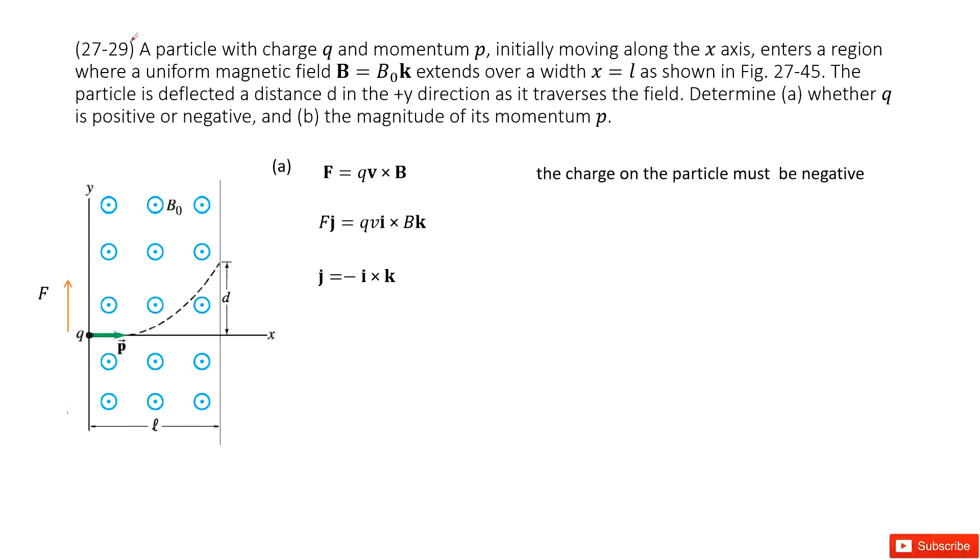So we have a charged particle with momentum p, initially moving along the x-axis, and it enters a region where a uniform magnetic field is given. It is in the k component. We know the particle is deflected a distance d in the positive y direction. So it moves this way. First, determine whether this charge q is positive or negative. So how can we do that?